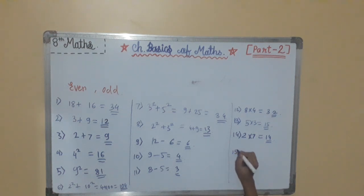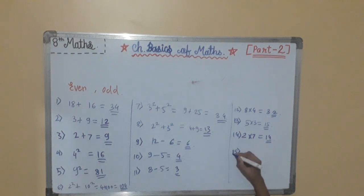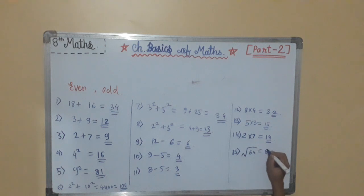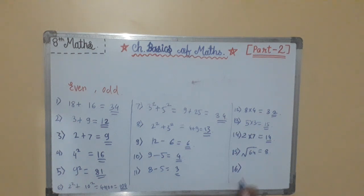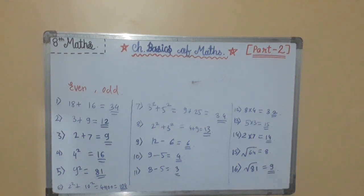Property 15: the square root of an even number which is a perfect square is even. For example, the square root of 64 is 8, which is even. Property 16: the square root of an odd number which is a perfect square is odd. For example, the square root of 81 is 9, which is odd.